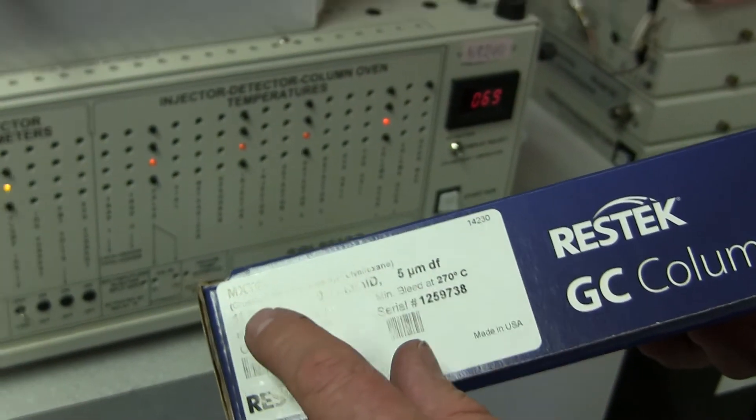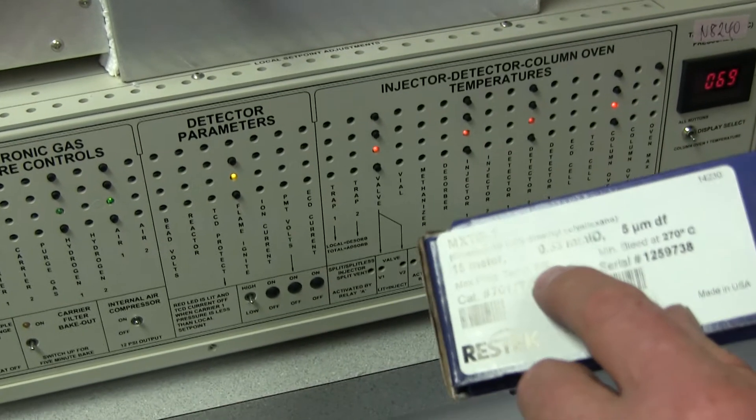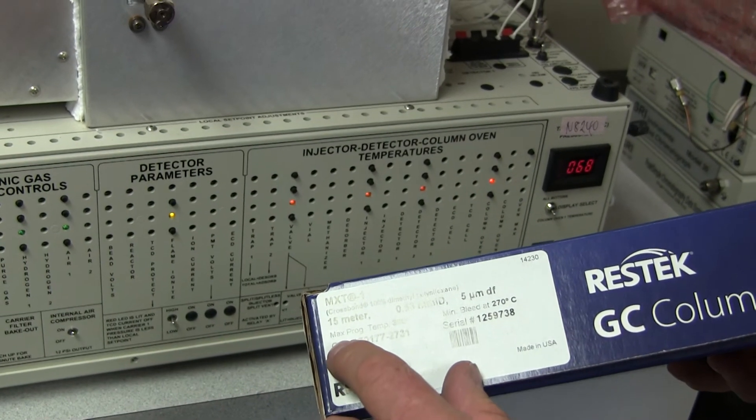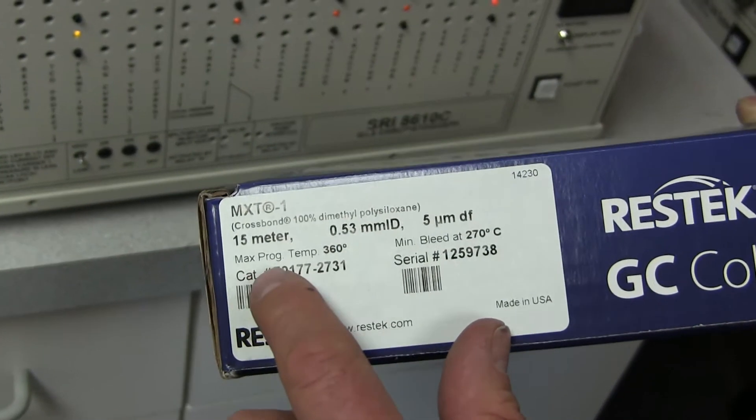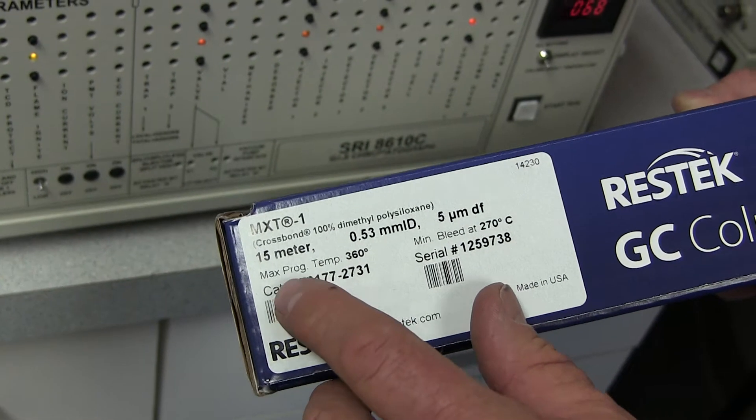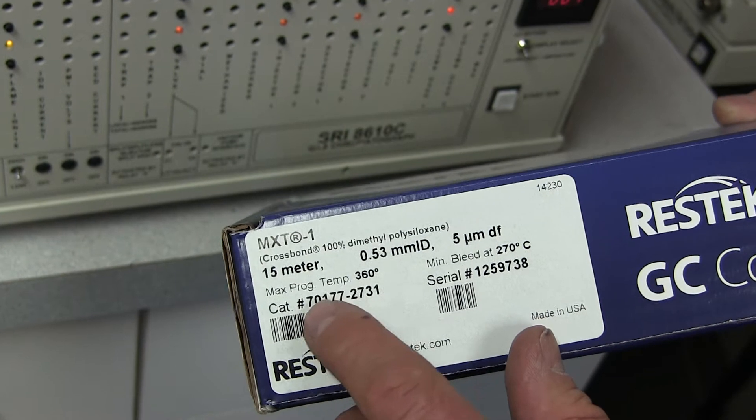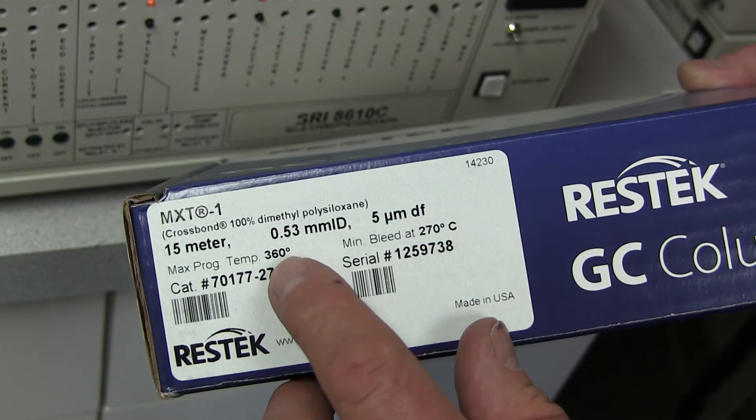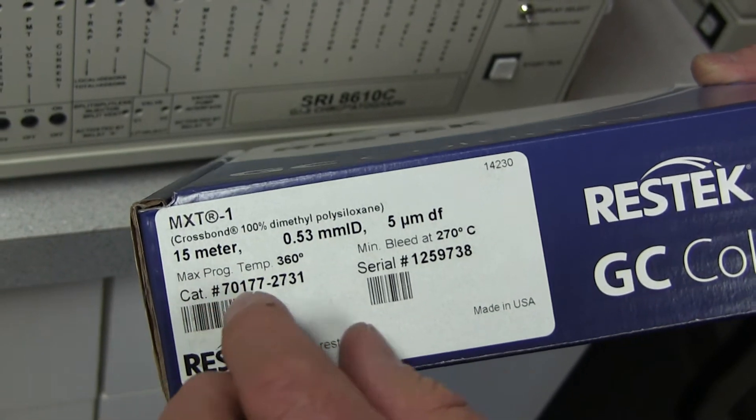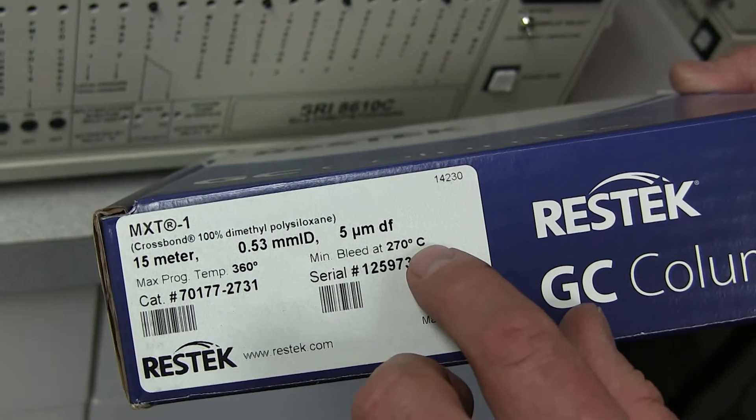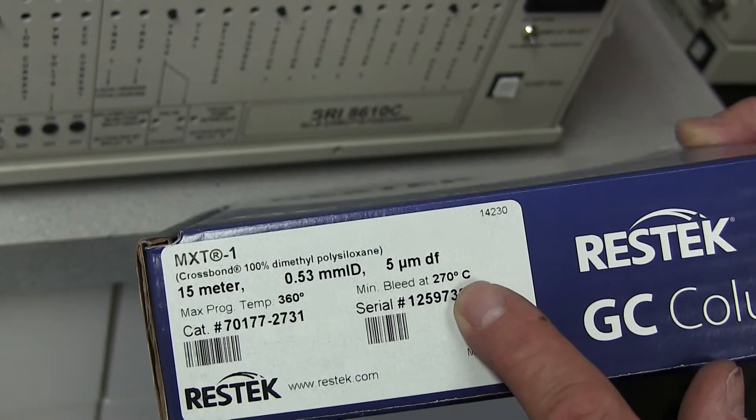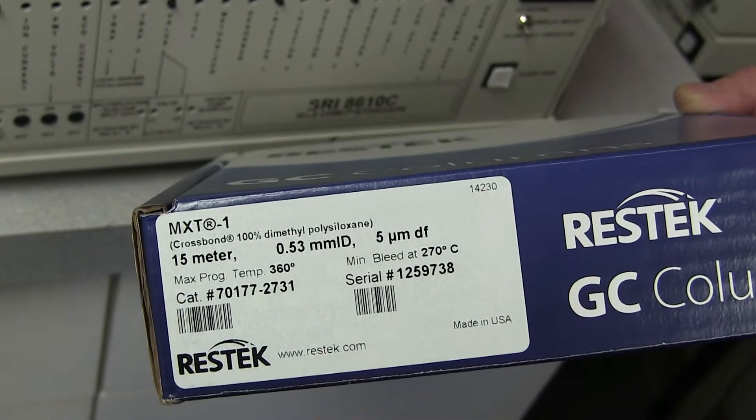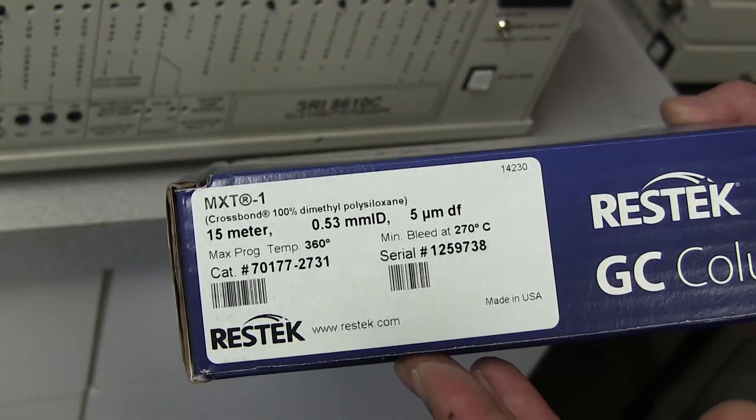What they're really saying to you is you can't really take it to over 360 degrees, and if you do take it to 360 degrees, then you can't stay there for very long because that's called a programmed temperature. So really, the maximum temperature of this column to be safe is probably more like 330 or 340 degrees. You really don't want to go right to the limit of what Restek says is safe for a very small amount of time. They're also telling you that the minimum bleed at 270, what that means is if you go over 270, you can expect there's going to be lots of increased baseline bleed, which is a rise in the baseline when you go over a certain temperature.